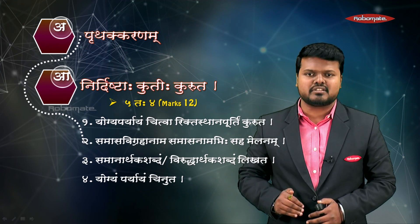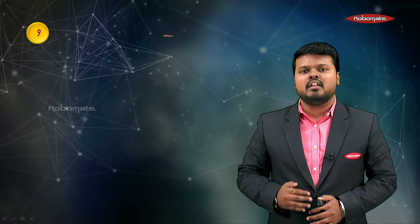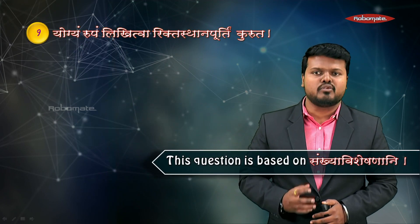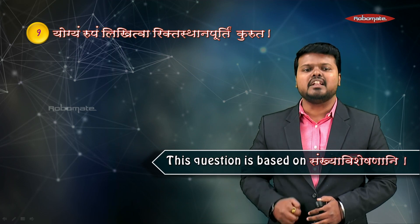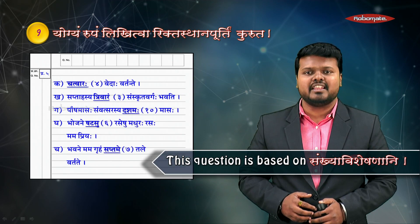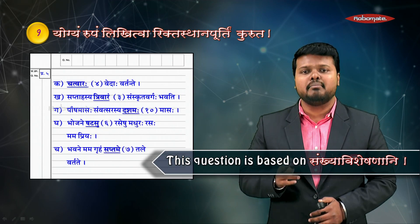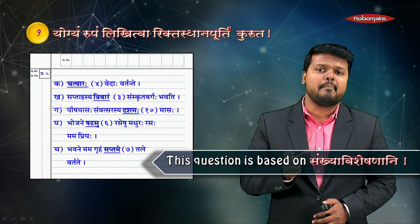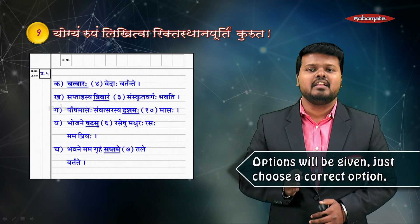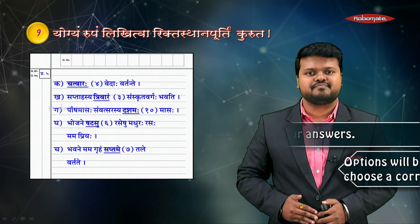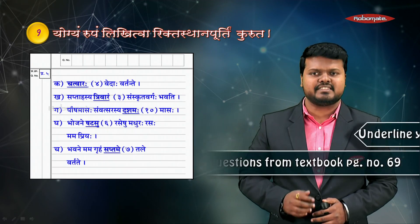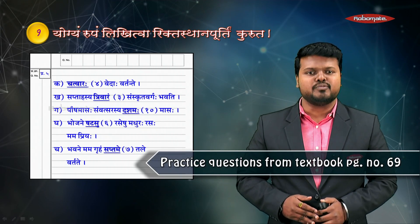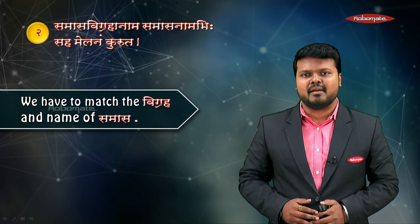The first question, Yogyam Rupam Likhitva Riktasthana Purutim Kuruta, is completely based on Sankhya Vishesha Nani, where they give a sentence with a number in brackets. We have to find the proper option given at the end of the sentence and underline the answer word. Practice can be done from textbook page number 69.